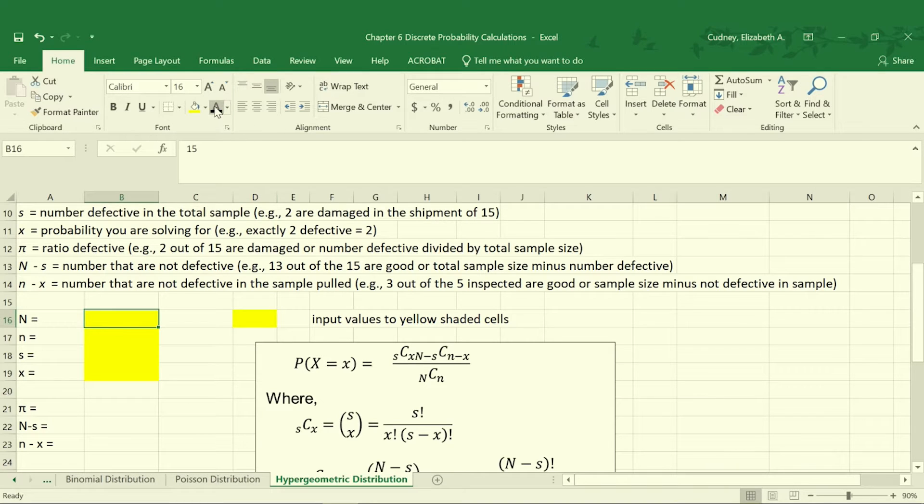So for N, our capital N, that's our total sample size. And that was our 15. Our lowercase n is a sample that we're pulling. Those five refrigerators out of the 15. Our S is a number defective in the total sample. So we knew that two were damaged out of the 15. And then our X is what we're solving for. And we're looking for exactly two defective. Our pi is our ratio of what's defective. So we know that two, our B18, which was S, divided by our total number sampled, our capital N, which was B16. So that's 0.133.